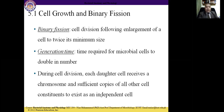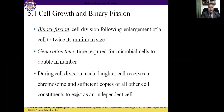During cell division, each daughter cell receives a chromosome and sufficient copies of all other cell constituents to exist as an independent cell. During binary fission, cells receive an equal number of chromosomes and sufficient copies of all other cell organelles to exist as independent cells.